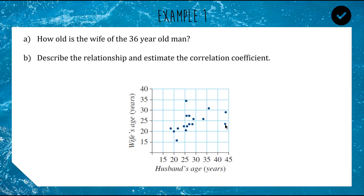But you know, love is love and all that. Reading off this scatter plot: how old is the wife of the 36-year-old man? The 36-year-old man is this point right here — 36 on the x-axis — and his wife's age is just above 30, so we'll say 31.